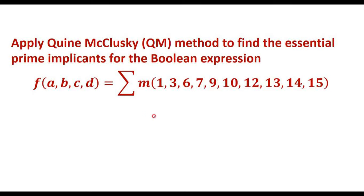In this video, let me explain the given Boolean expression using the Quine-McCluskey method. Apply the Quine-McCluskey method to find the essential prime implicants for the Boolean expression. The function f is given with minterms 1, 3, 6, 7, 9, 10, 12, 13, 14, and 15. We are supposed to simplify this using the Quine-McCluskey method. First, let me represent all these minterms in terms of binary.